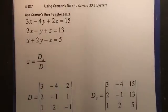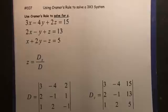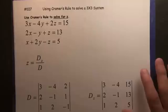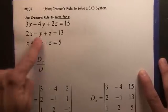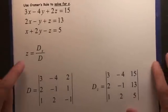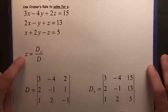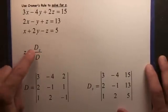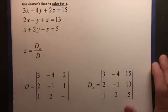Using Cramer's Rule to solve a 3x3 system, we're going to use Cramer's Rule to solve for z. So we have a 3 equation, 3 variable system. Cramer's Rule tells us that z will equal d sub z over d, where d sub z is the determinant with respect to z.